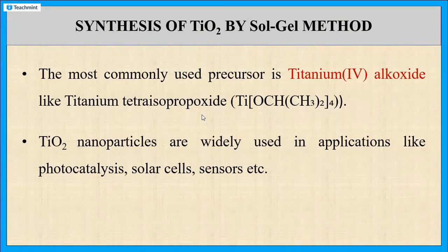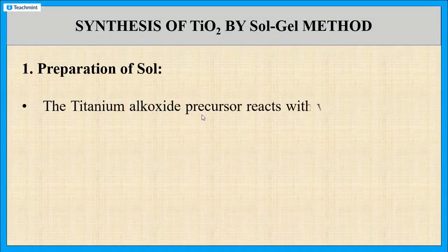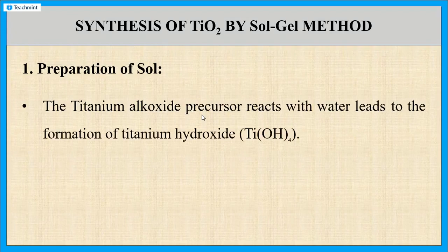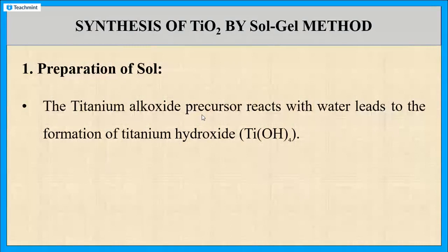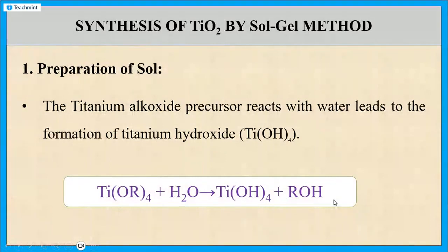Now let us see the steps involved in the synthesis of titanium dioxide by the Sol-gel method. The first step is the preparation of Sol. Here the precursor, titanium alkoxide Ti(OR)4, reacts with water molecules. The formation of titanium hydroxide Ti(OH)4 takes place, along with the formation of alcohol. This reaction creates a stable colloidal solution — the Sol.